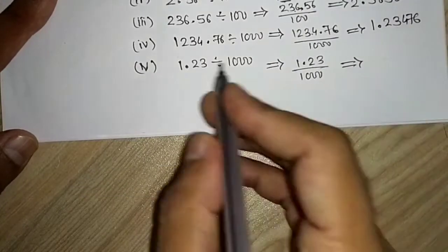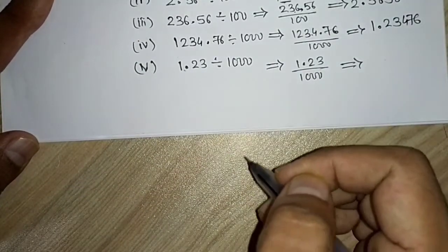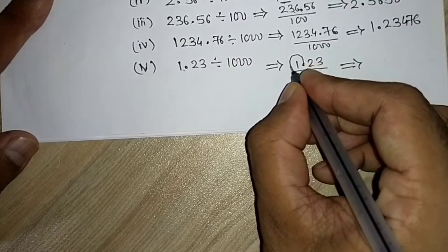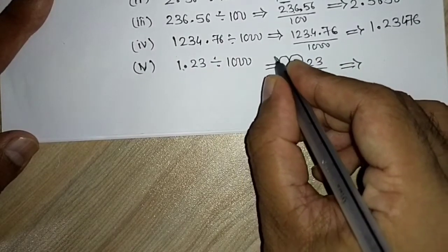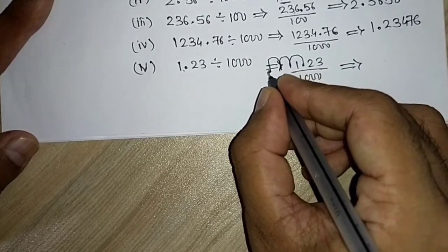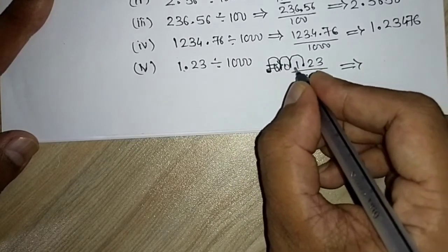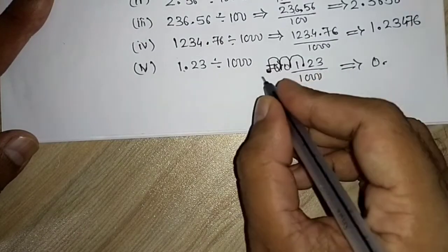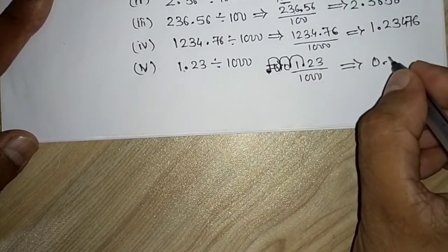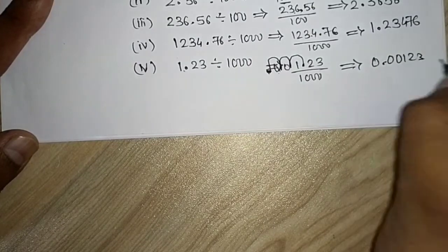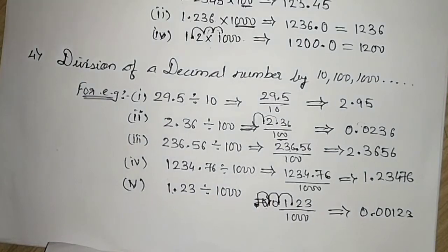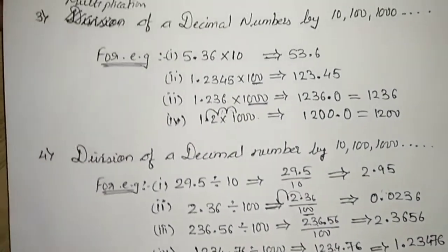For 1.23 ÷ 1000: shift three decimal places — 1, 2, and 3. The decimal point moves far left, adding leading zeros. The answer is 0.00123.